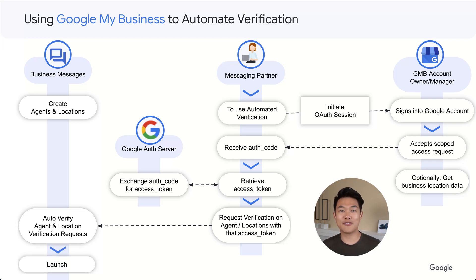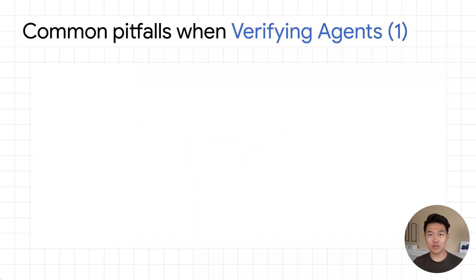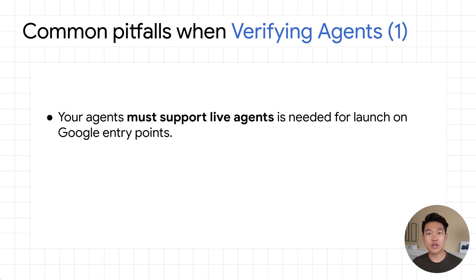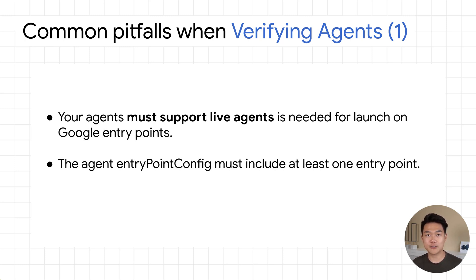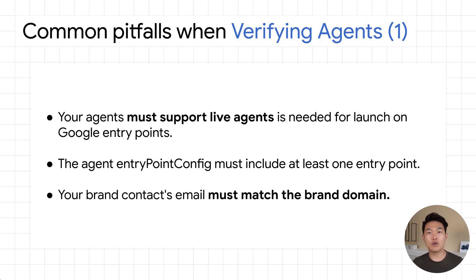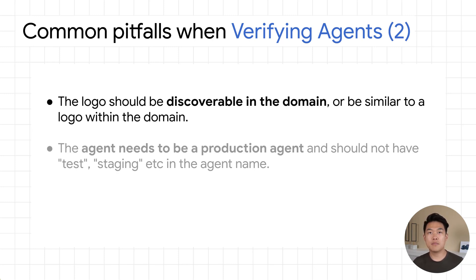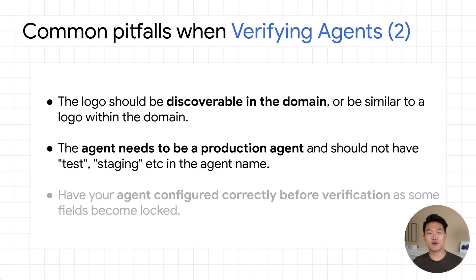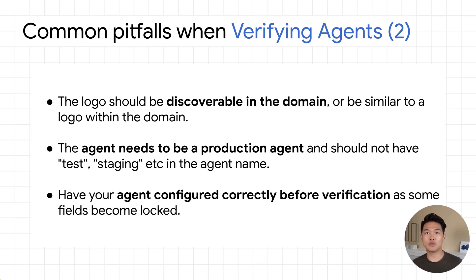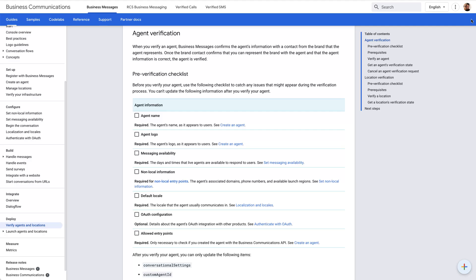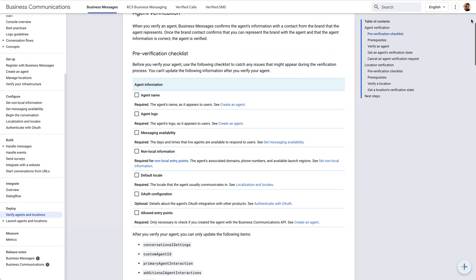Let's chat about the common pitfalls we've seen when partners are verifying agents. When you launch on a Google entry point, you must support live agents. Your agent configuration must include at least one entry point configuration. Ensure the brand contact email matches the brand domain. Ensure that the logo or a similar logo is discoverable within the brand's website. Test agents are rejected from launch, so make sure to verify only agents you intend to use in production. Have your agent configured correctly before requesting verification — some fields will become non-editable. You can use the pre-verification checklist on the developer website to help catch any issues before you verify.